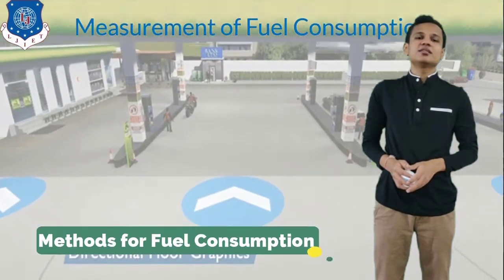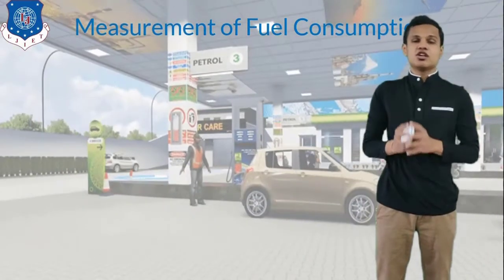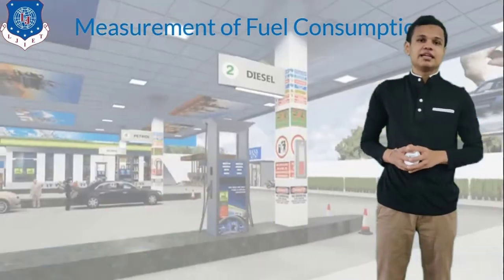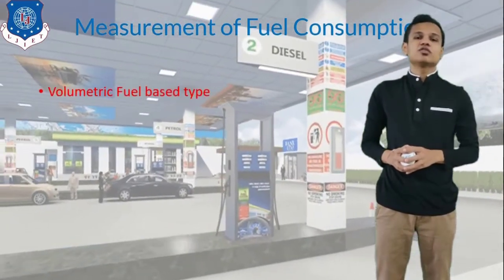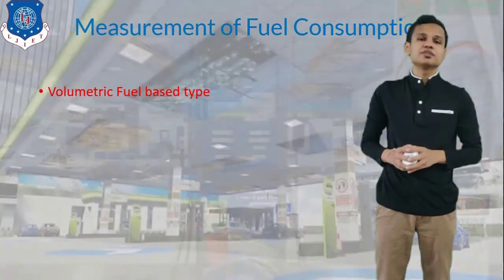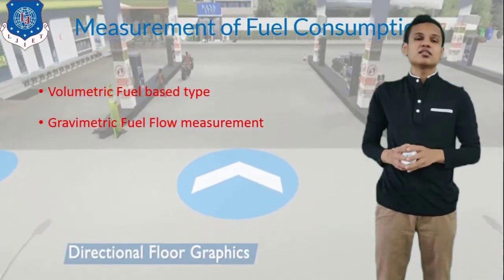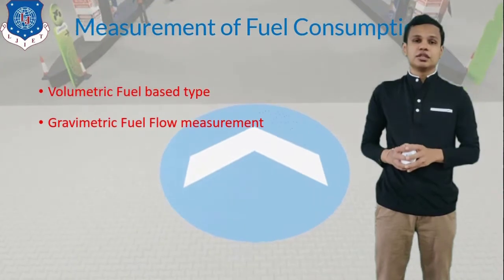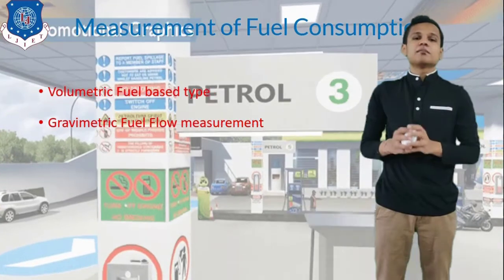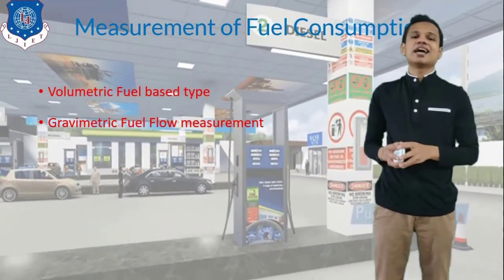The first thing is the instruments required to measure the fuel consumption. The first one is the volumetric-based type analysis of fuel consumption, and the second one is the gravimetric type analysis. These two types give you the fuel consumption based on fuel consumed per time — volumetric gives liters per second, and gravimetric gives kilograms per second.